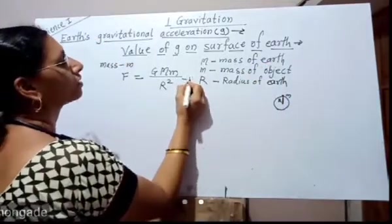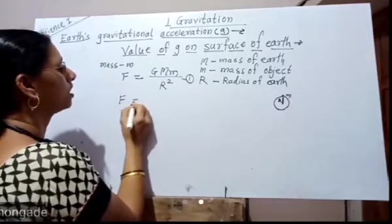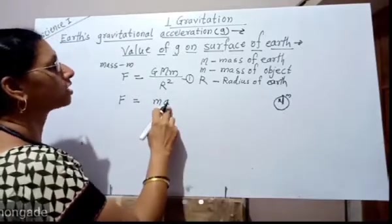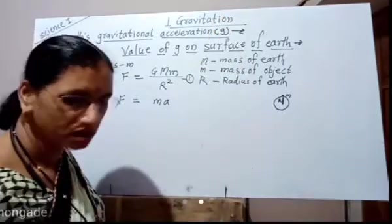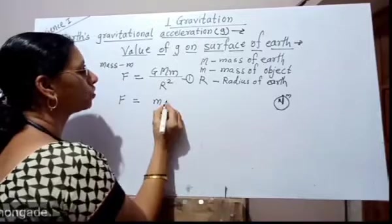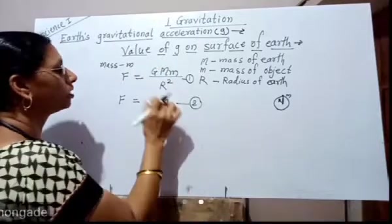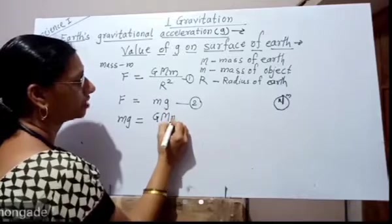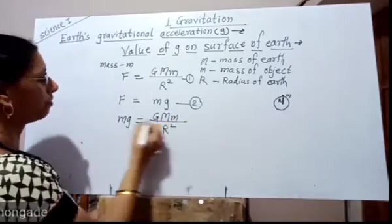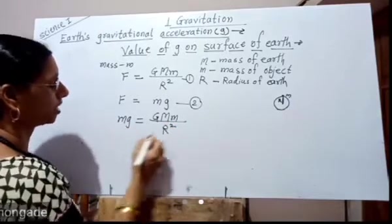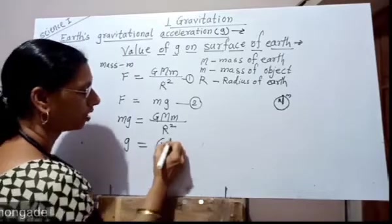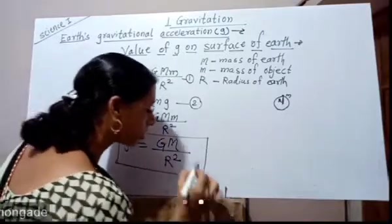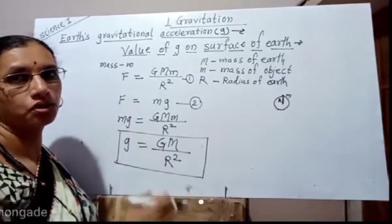This is equation one. We also know by Newton's second law of motion that F equals m times a. But here the acceleration is due to the earth, denoted by small g. Therefore we write F equals m times g. Comparing both equations, we write m times g equals G times capital M times small m divided by R square. Dividing both sides by m, we get: g equals capital G times capital M divided by R square. This is the equation for earth's gravitational acceleration.